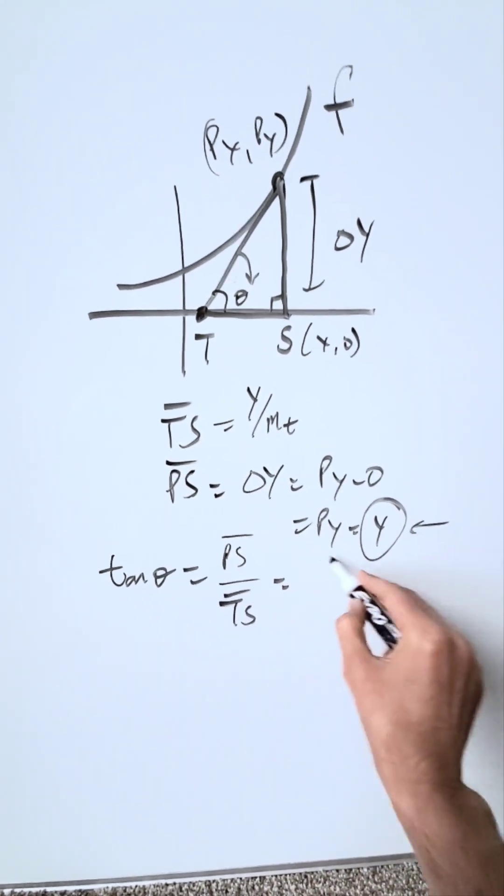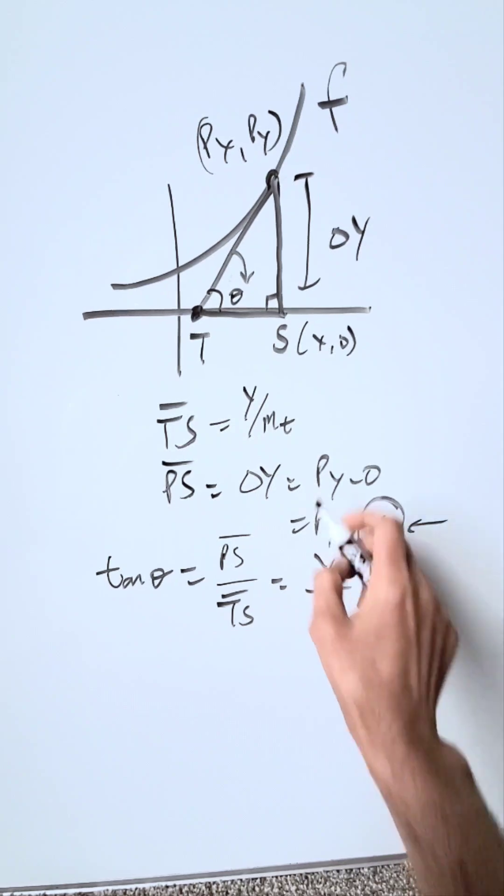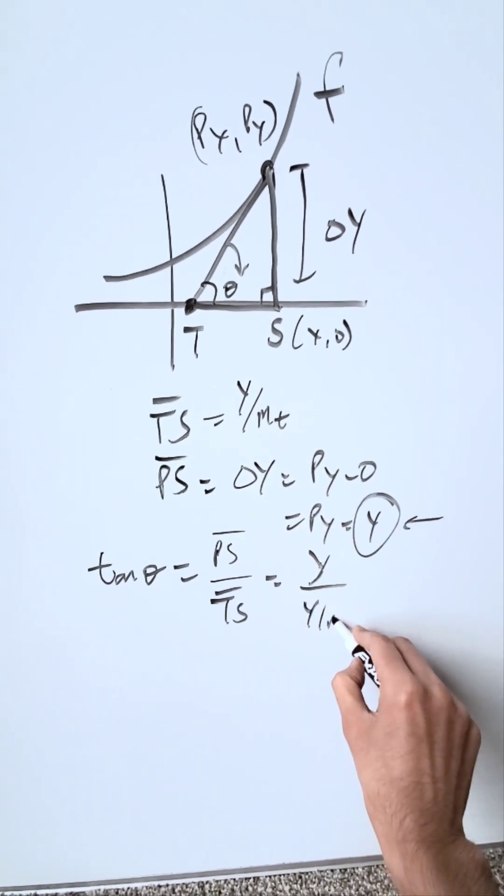What is ps equal to? It's y. What's your length of your ts, your subtangent? It's y over mt.